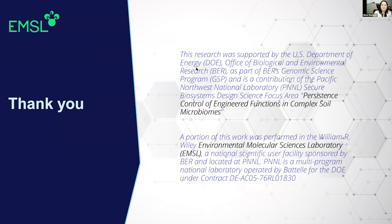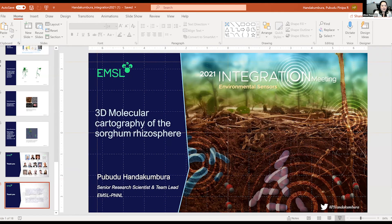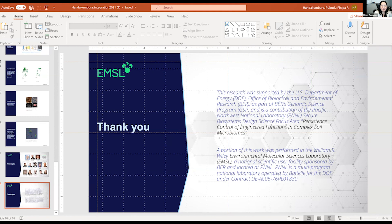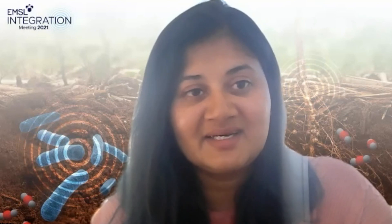Thank you so much, Pupudu — that was a really fascinating talk. I really loved seeing the future directions about trying to map 3D visualizations of where you can find different metabolites along the root. If anybody has any questions, please put them in the chat. One question: how did you segment your XCT images? That would be a question for Thomas and Anil, who are the experts doing XCT image processing — I'd have to defer to them for that.